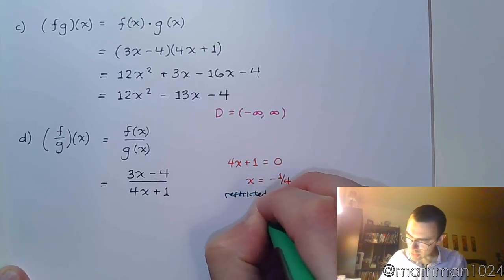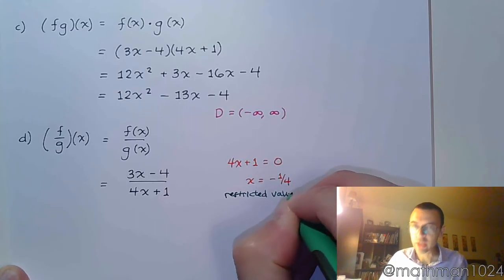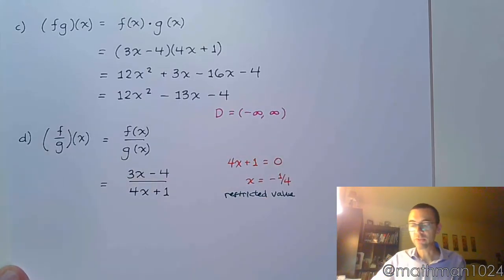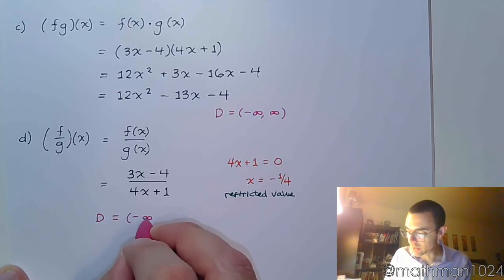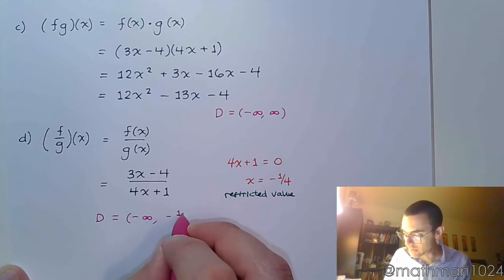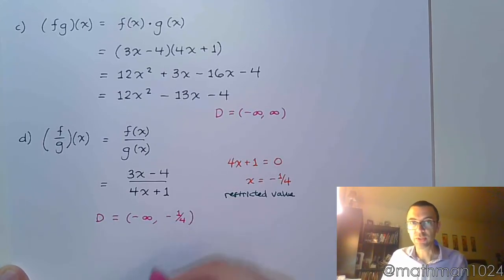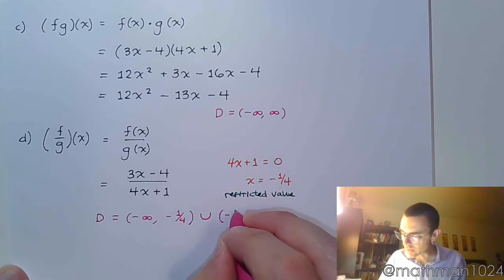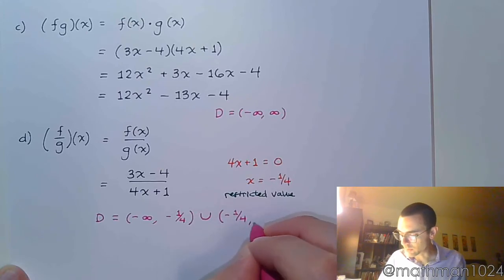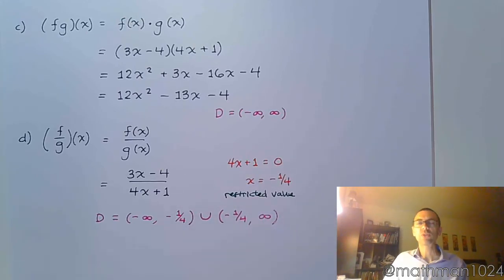So when we're trying to talk about what our domain is, our domain is going to be everything but negative 1 fourth. So our domain is going to be from negative infinity up to negative 1 fourth with parentheses because we can't include that, and then union, we go just to the other side of this, on the right side of negative 1 fourth, and we keep on going to infinity. So this is how you would describe everything, all real numbers, but removing that single value of negative 1 fourth.